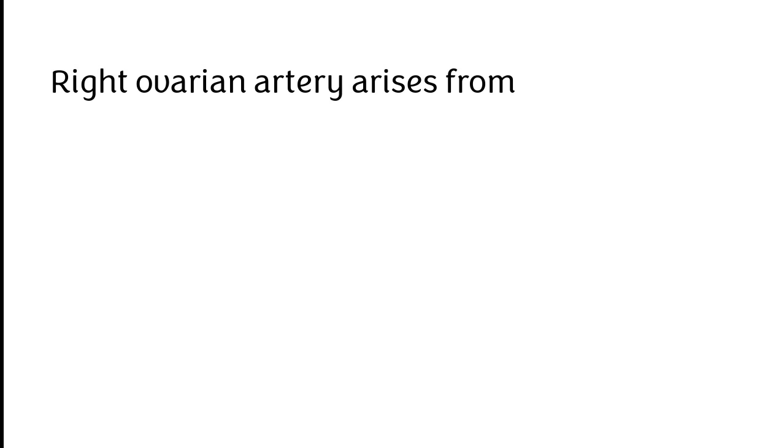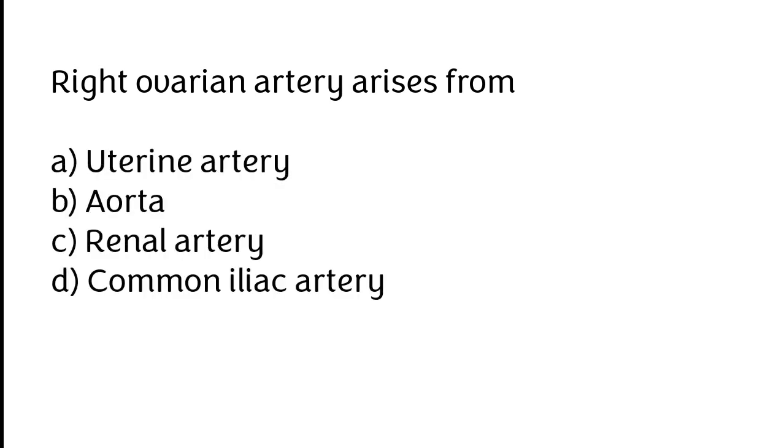Right ovarian artery arises from uterine artery, aorta, renal artery, or common iliac artery. The correct answer is option B. Right ovarian artery arises from aorta.